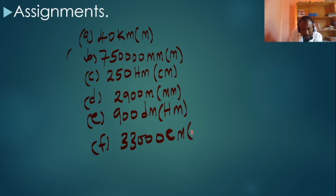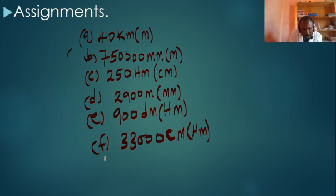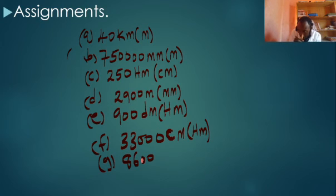F/G. Convert 8,600 meters to kilometers.